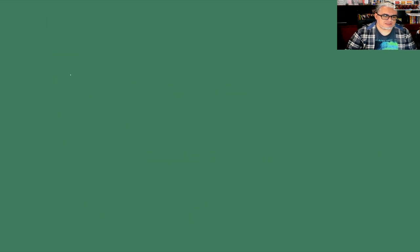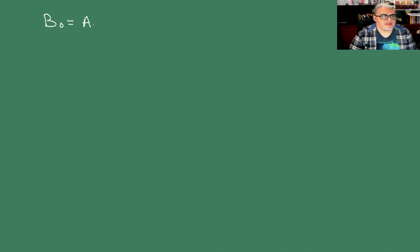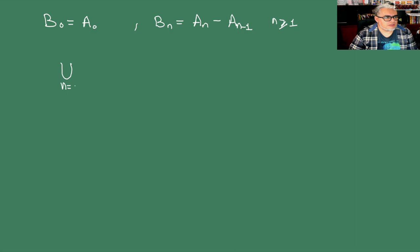Vamos a tomar B_0 igual a A_0 y B_N igual a A_N menos A_{N-1}, con N mayor o igual que 1. ¿Quién es la unión con N desde 0 hasta infinito de las B_N? Esto es la unión con N desde 0 hasta infinito de A_N menos A_{N-1}.